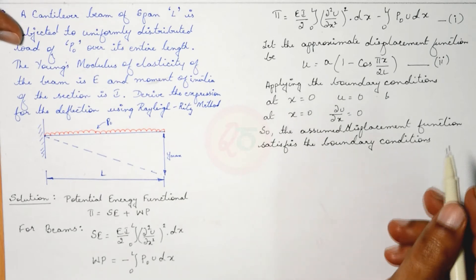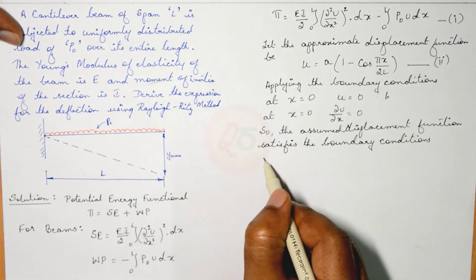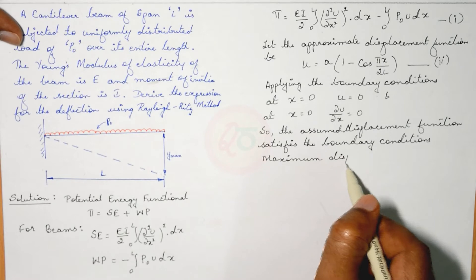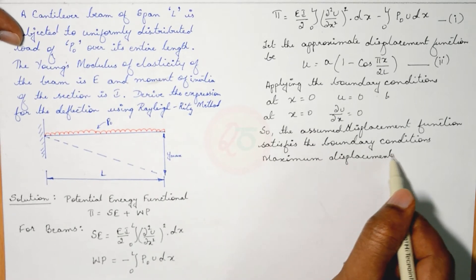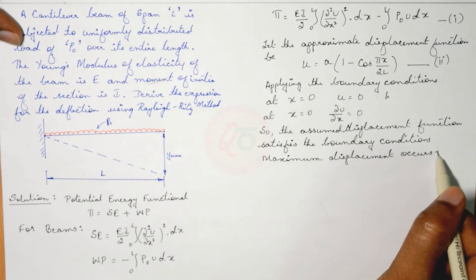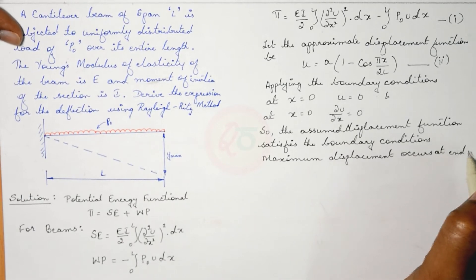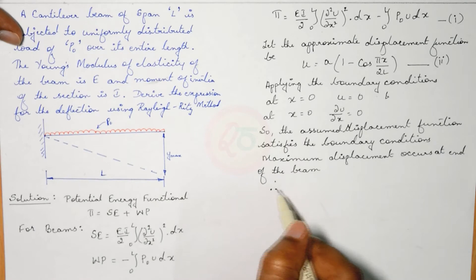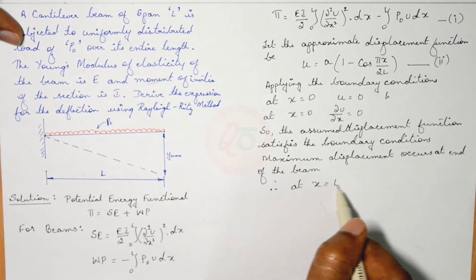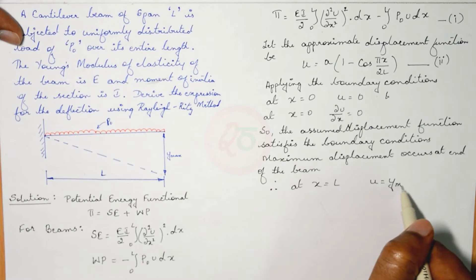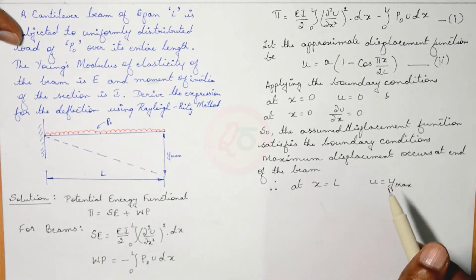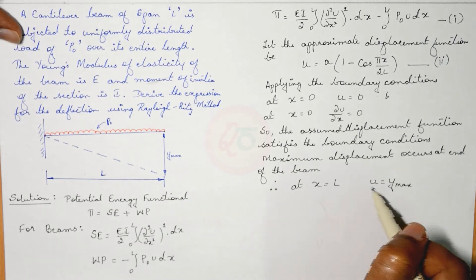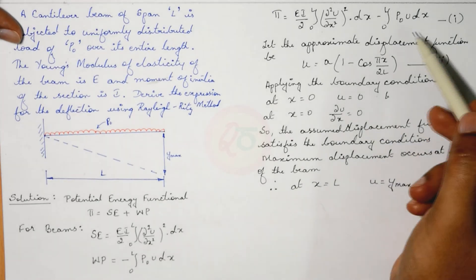The maximum displacement also occurs at the free end, at x = L. So maximum displacement occurs at the end of the beam. At x = L, u = Y_max.